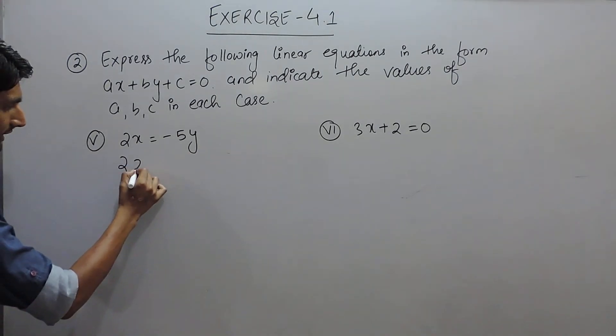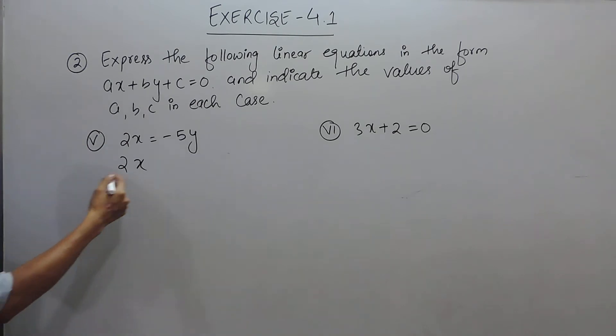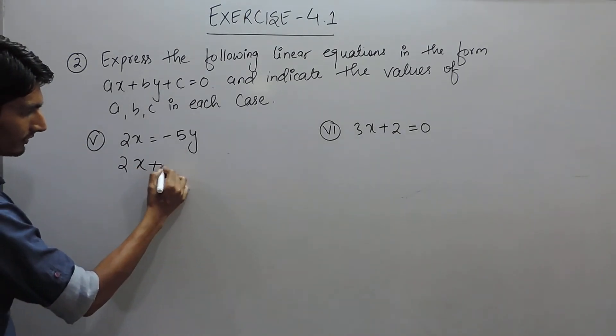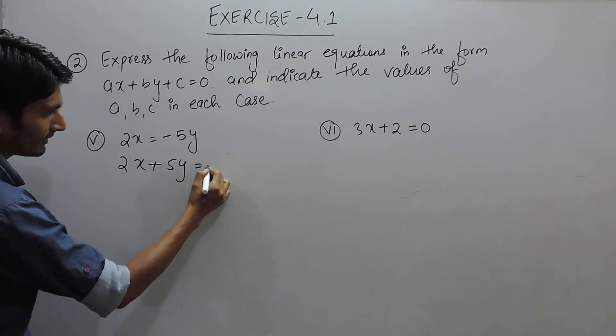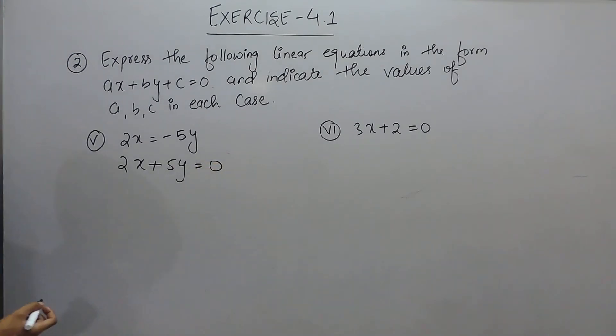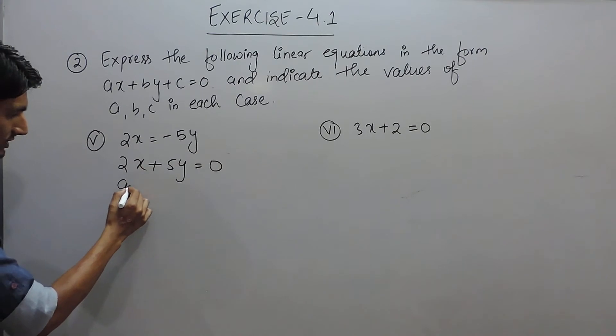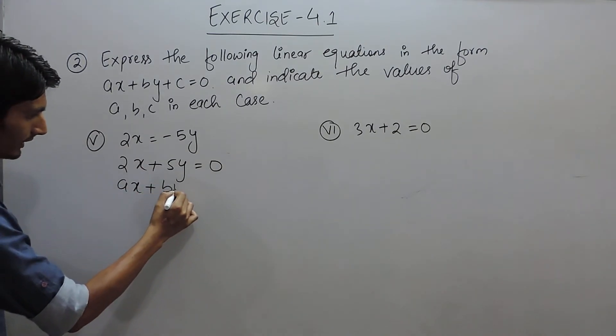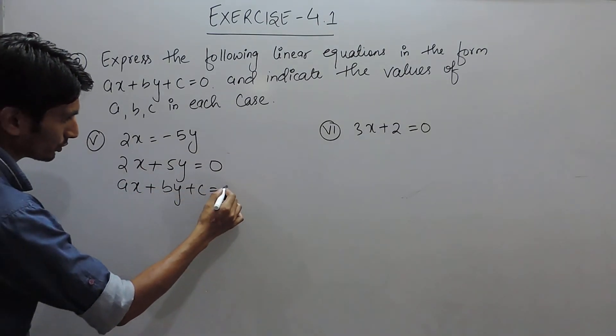First of all, shifting everything to the left hand side, so this minus 5 will be equal to plus 5y and on the right hand side only 0 will be there. So comparing it with the standard form, ax plus by plus c is equal to 0.